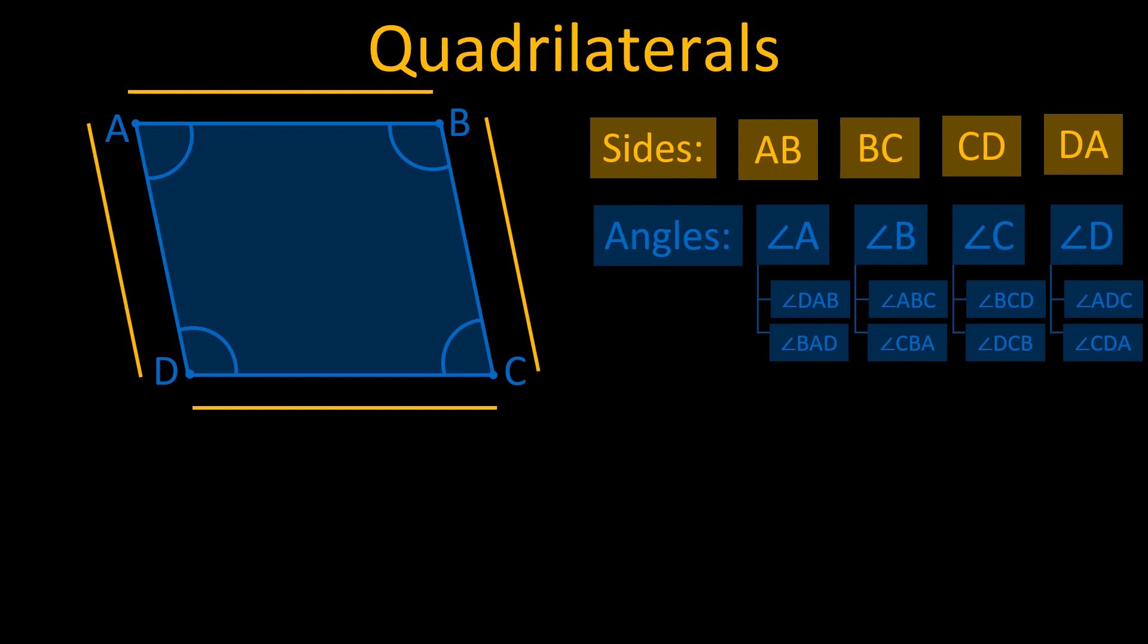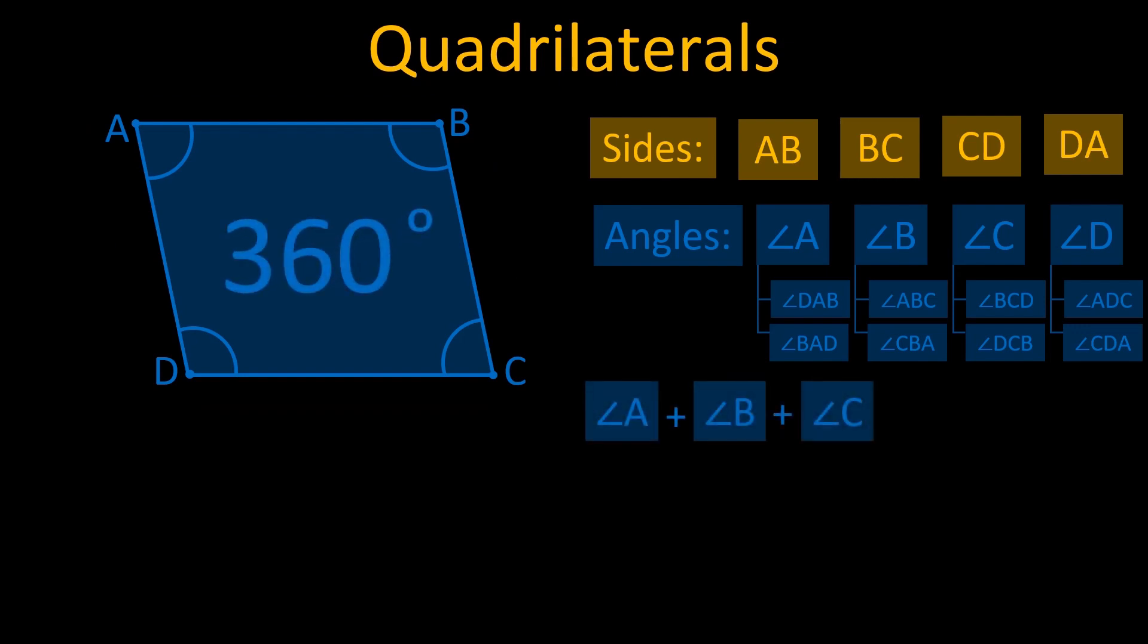One important property of quadrilaterals is that the sum of the interior angles of a quadrilateral is always equal to 360 degrees. So angle A plus angle B plus angle C plus angle D equals 360 degrees.